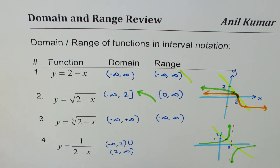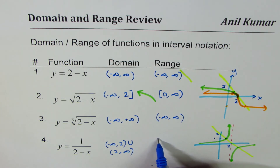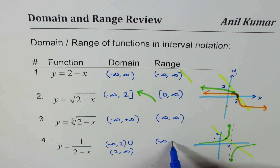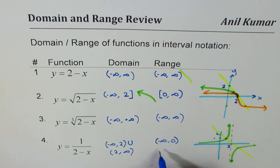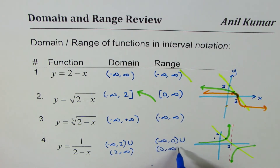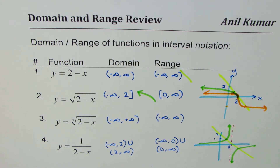The range of 1/(2 - x) is any value except 0, since y = 0 is a horizontal asymptote. So the range is (-∞, 0) ∪ (0, +∞). That is how you can find domain and range for these functions using graphs.